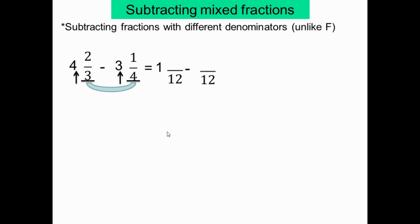Le dénominateur commun est 12. Multiples de 3: 3, 6, 9, 12, 15, 18... Multiples de 4: 4, 8, 12, 16... Le LCM est 12. 12 divisé par 3 égal 4 fois 2 égal 8. 12 divisé par 4 égal 3 fois 1 égal 3. Je pense que dans la vidéo précédente on a tout expliqué.